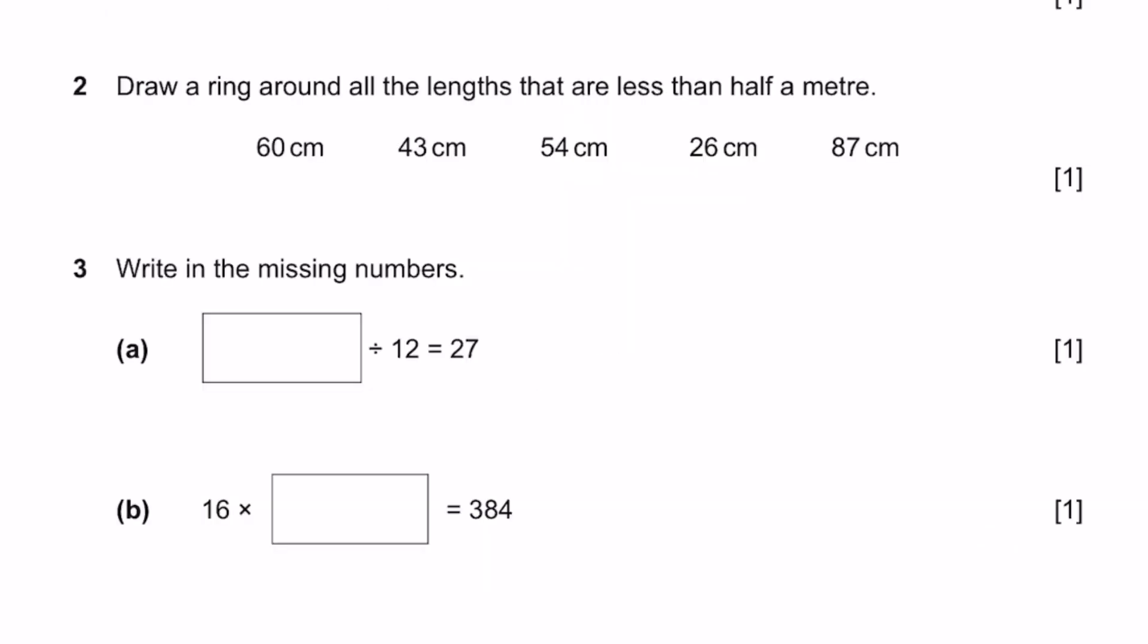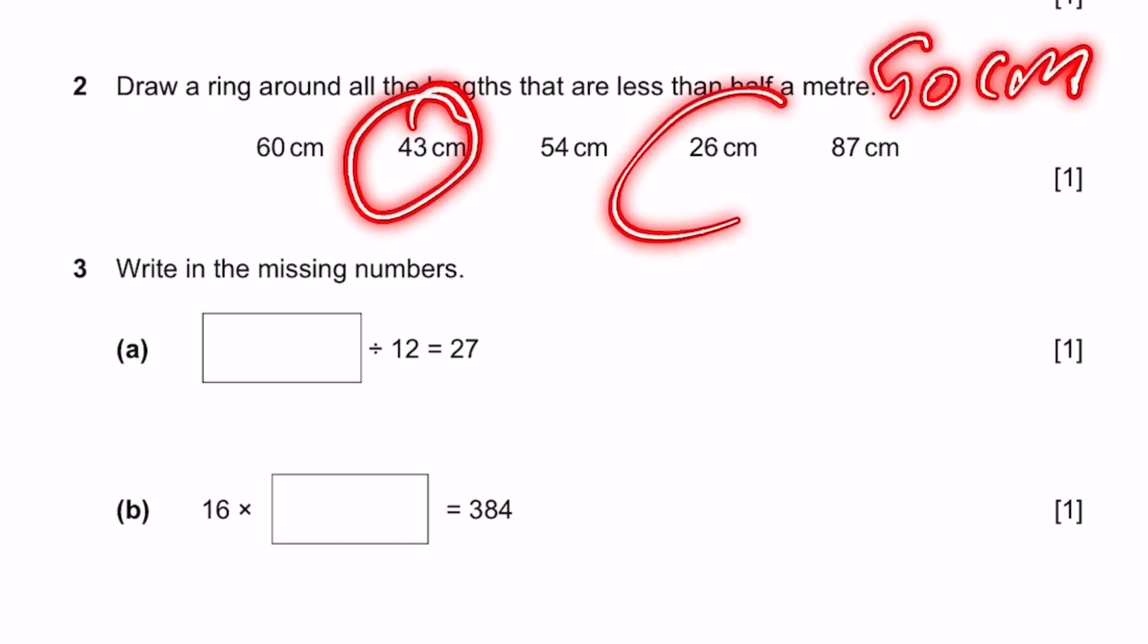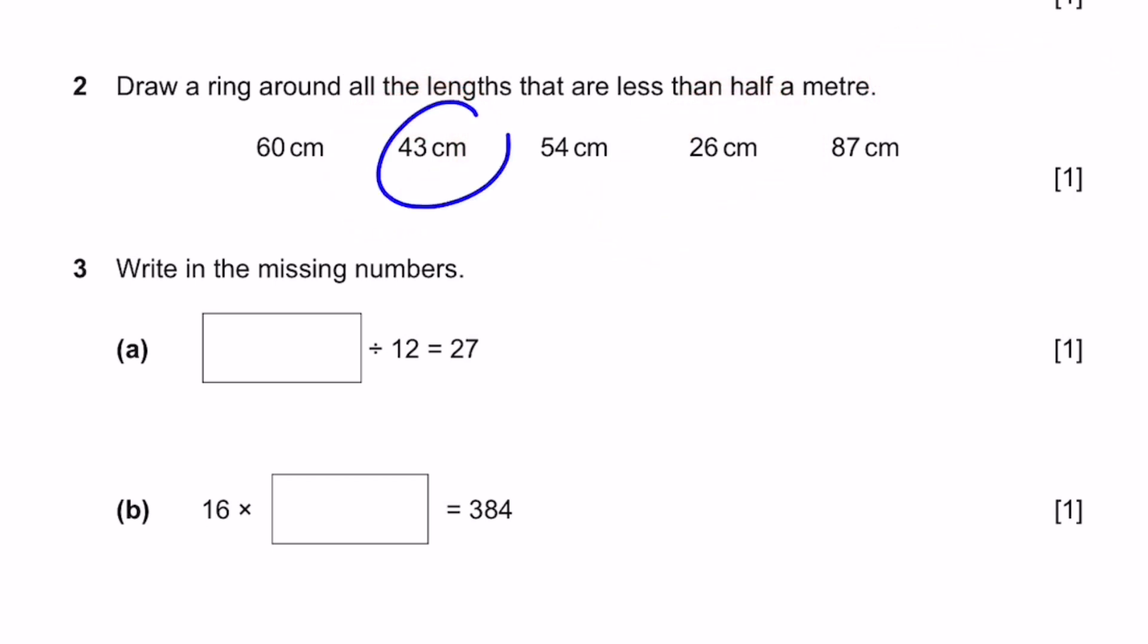Question 2. Circle the pencils that are less than half a meter. So half a meter is 50 centimeters. Whichever are less than that are 2, 43, and 26 centimeters. That's the answer.